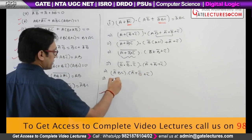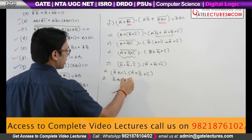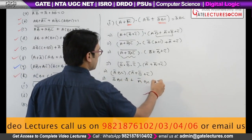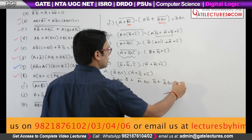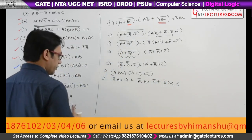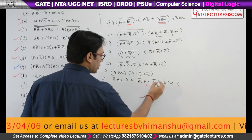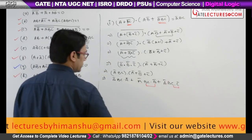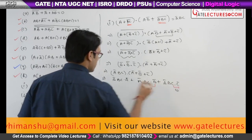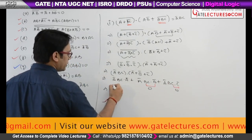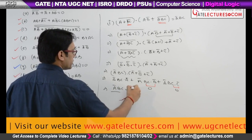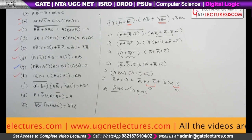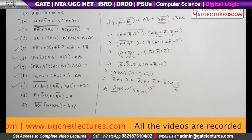Opening the brackets: A'BC · A' + A'BC · B' + A'BC · C'. Because we got B and B' in the second term, and C and C' in the third term, those expressions become 0. So it is A'BC · A' + 0 + 0 = A'BC, which equals the right hand side. Hence this is also proved.